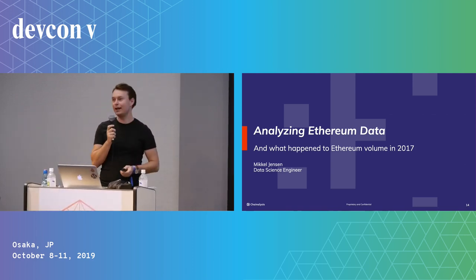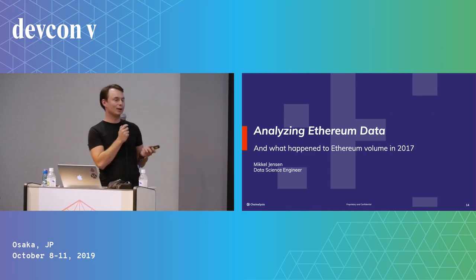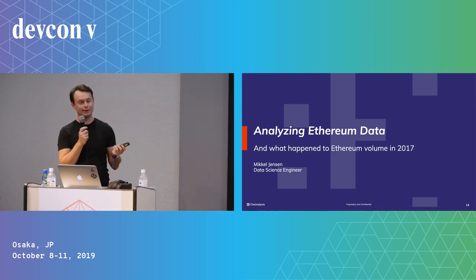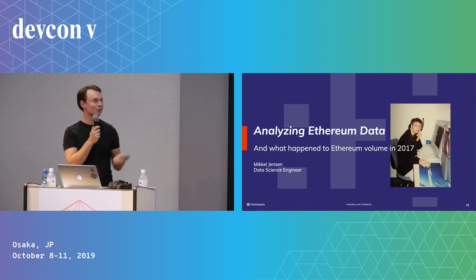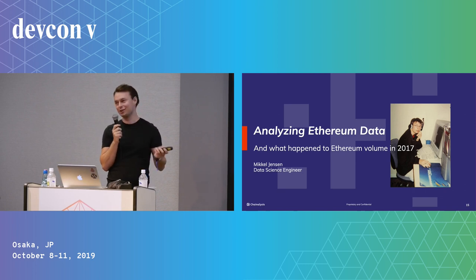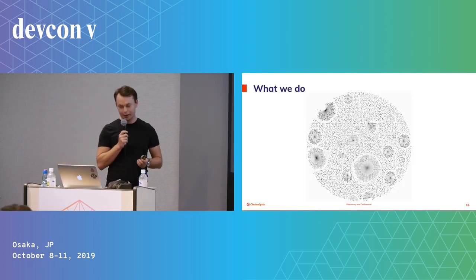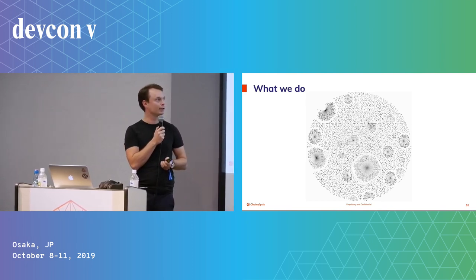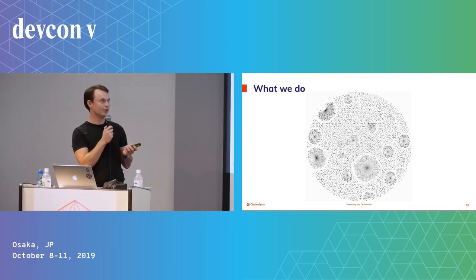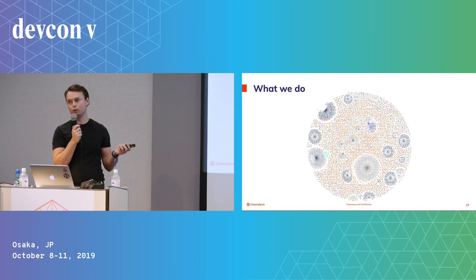My name is Mikko and I work in the research department at Chainalysis — I get to do some of the fun stuff. The subtitle is: what happened to the Ethereum volume in 2017? We start out with no knowledge about what's happening on the blockchain. This is a visualization of addresses interacting in some blocks, and our goal is to turn this into something where we have an idea of what belongs together and how different entities interact — basically gaining knowledge about who's interacting with whom on the blockchain.